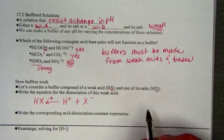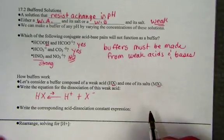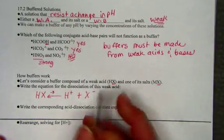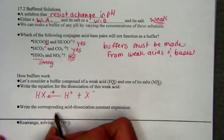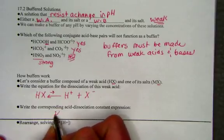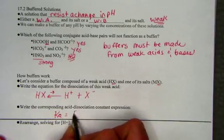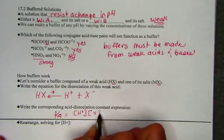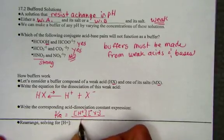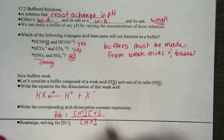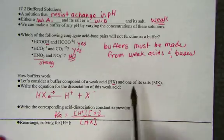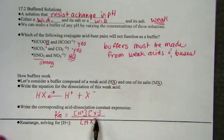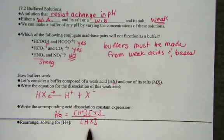If we write the corresponding acid dissociation expression, its products over reactants, we would find that the Ka is found by multiplying the hydrogen ion times the negative X ion all over the value of the molecular form of the acid, HX. Ka represents the ions over molecules, the dissociated over the undissociated form of our acid.